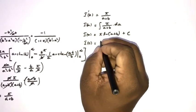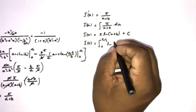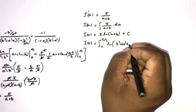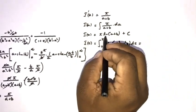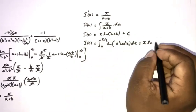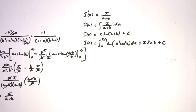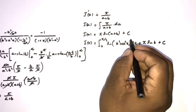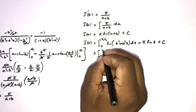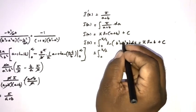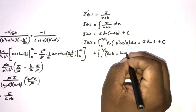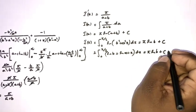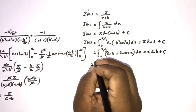To find the constant C, we evaluate I(0): the integral from 0 to π/2 of ln(b²cos²x) dx. This equals π·ln(b) + C. Using the logarithm property, ln(b²cos²x) = 2ln(b·cosx) = 2[ln(b) + ln(cosx)], so I(0) = 2·∫₀^(π/2) [ln(b) + ln(cosx)] dx = π·ln(b) + C.